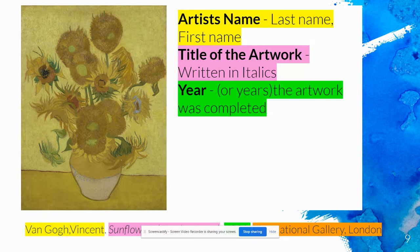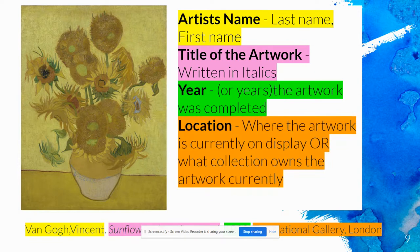Next, in orange, is the location where the work of art is currently on display, or whatever collection owns that artwork. This work of art is at the National Gallery in London. It might say the Museum of the Art Institute of Chicago, or it might even say 'private collection' because somebody owns it and has it on display at their house or in a warehouse.